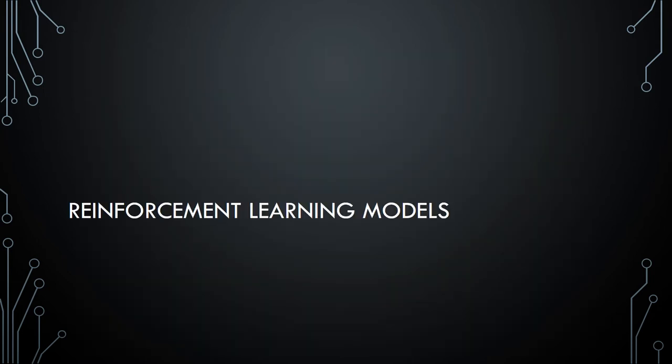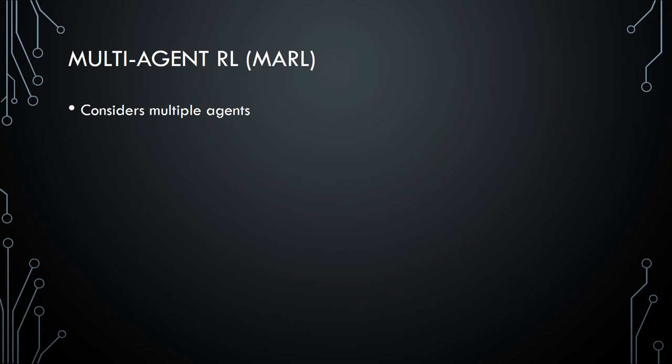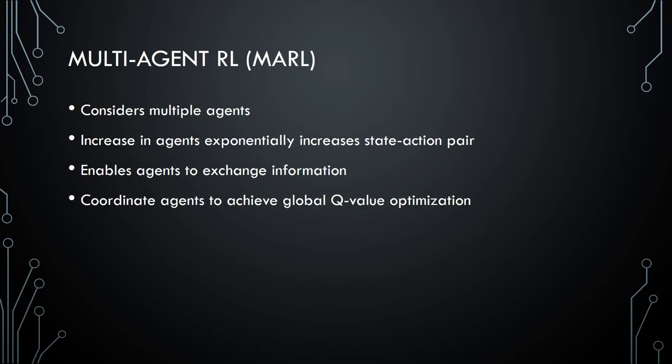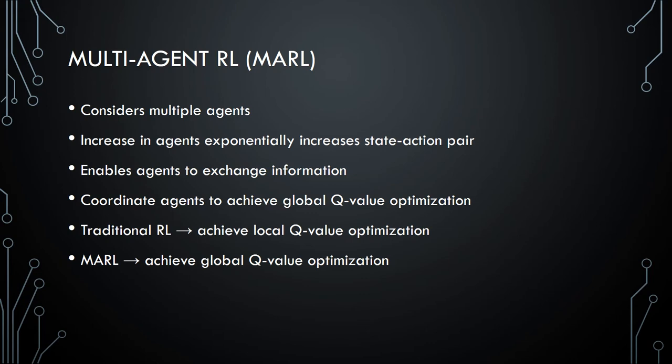Now let's discuss the different reinforcement learning models which have been put into use. We have around five RL models. First is multi-agent reinforcement learning or MARL. It considers multiple agents, and increasing the number of agents blows up the number of state-agent pairs. It enables agents to exchange information and coordinates agents to achieve a global Q-value optimization, whereas in traditional RL we try to achieve a local Q-value optimization where each agent tries to achieve the best for itself.